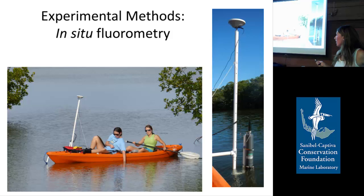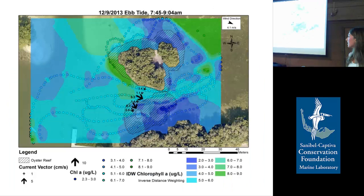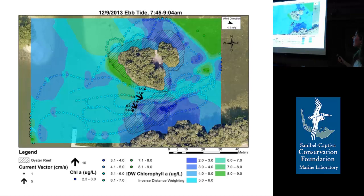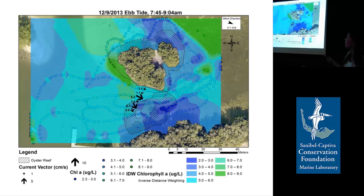We paddled slowly over the reef back and forth to take points, and also took random water samples to correlate field measurements to laboratory measurements. I put all of these data points into GIS. You can see the water current speed and direction — it's mostly going one way. Where the water shows green for high chlorophyll, as it moves over the reef it decreases, so the reef is successfully filtering out a lot of chlorophyll A. There's another reef up here that's doing the same thing.